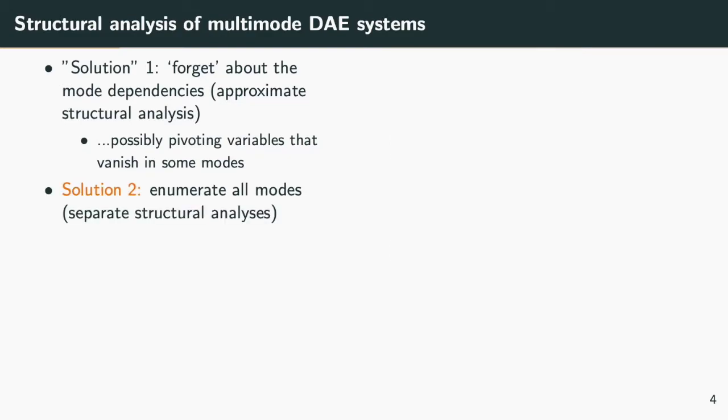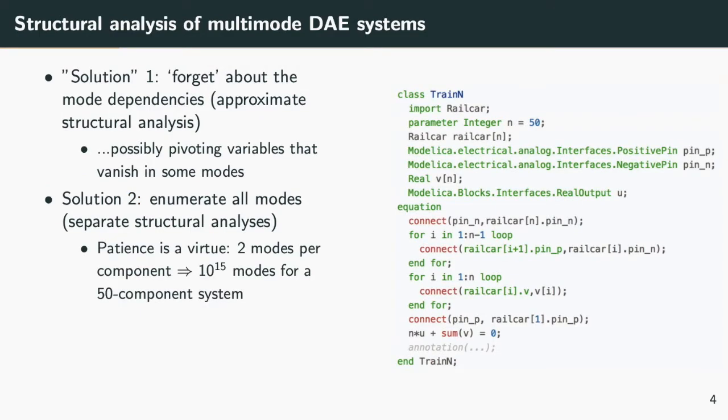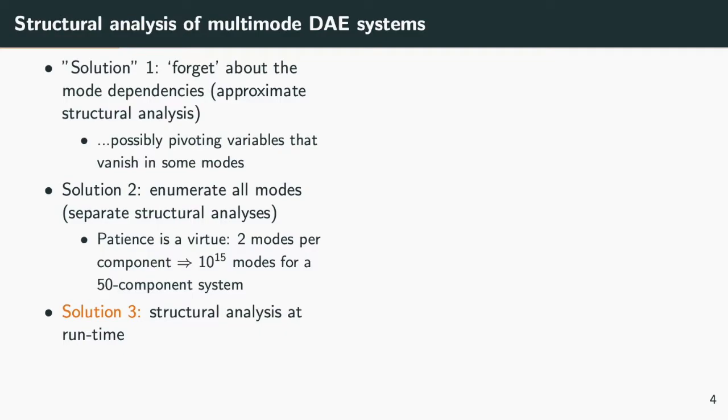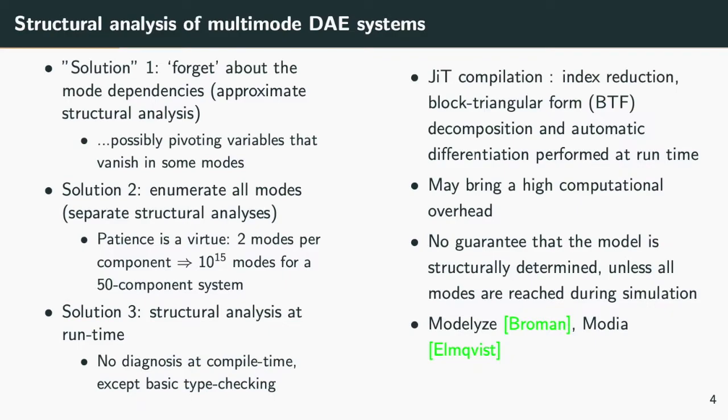Another solution would be to perform at compile time a structural analysis for each mode of the system by enumerating the modes. Of course, this would not scale up. The third solution is to do the structural analysis at runtime. This can be seen as a just-in-time compilation, because after the structural analysis has been done, some equations must be differentiated using automatic differentiation. This brings some computational overhead, but the instance of mode changes.